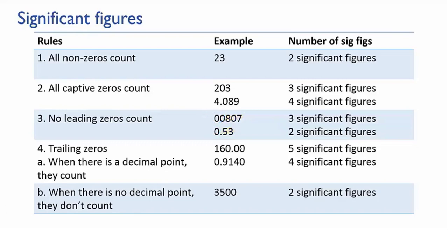The fourth rule is to do with trailing zeros, but there are two possibilities here. In numbers where there is a decimal point, trailing zeros are significant. This is because if a decimal point has been specified, then we know that all of those digits have actually been measured. If they hadn't, they wouldn't even be written down.